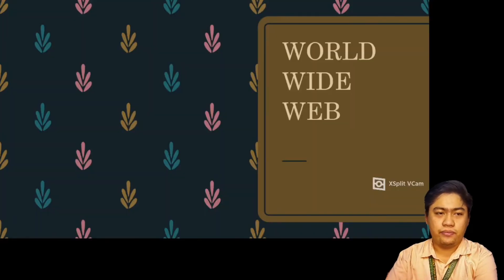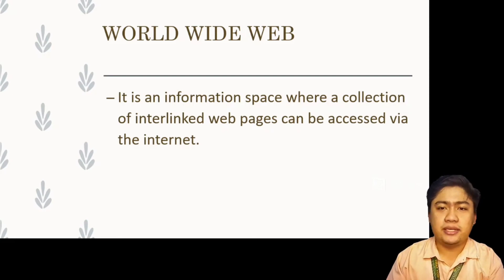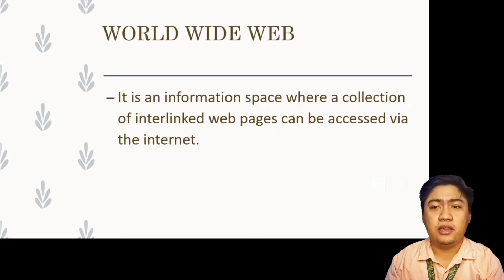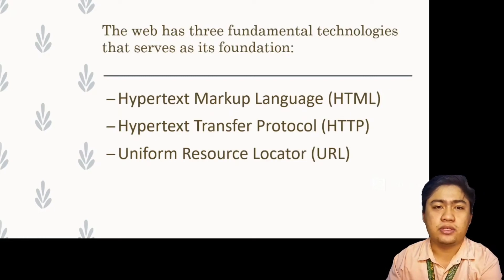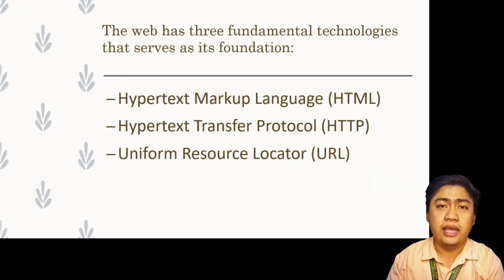Now let's look at the World Wide Web. The World Wide Web, or Web, or WWW, is an information space where a collection of interlinked web pages can be accessed via the internet. WWW allows millions of web pages to be accessed instantly with the click of a button. Web pages can include text, colors, sounds, pictures, and videos. The web has three fundamental technologies: HTML (Hypertext Markup Language), HTTP (Hypertext Transfer Protocol), and URL (Uniform Resource Locator).